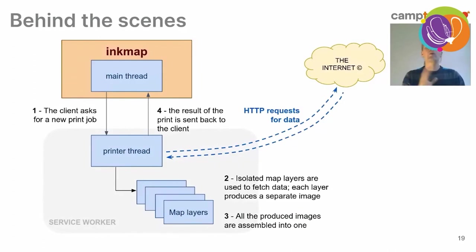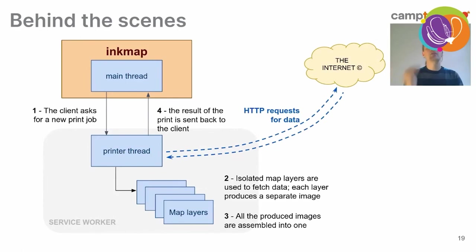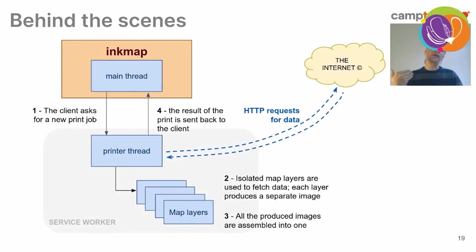A quick look at how Inkmap works behind the scenes. Inkmap works with two parallel threads. The main thread receives the print request and transmits it to the print thread. The print thread does all the work — it generates the layers, fetches the data, and when all layers have been rendered, it assembles them together. Once done, it sends back the final image to the main thread. All the heavy printing work is done in a service worker.